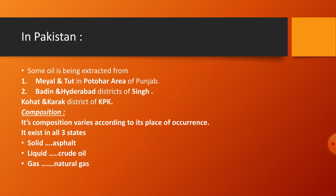Petroleum deposits are also found in Libya, Nigeria, Venezuela, Mexico, Canada, and in Pakistan in the areas of Pothohar, Meyal, Toot, Badin, and Hyderabad district of Sindh, and Kohat and Kohat district of KPK. The composition of petroleum varies according to its place of occurrence. Since it is a mixture of hydrocarbons, those with larger molecular weights are found in solid form, called asphalt.